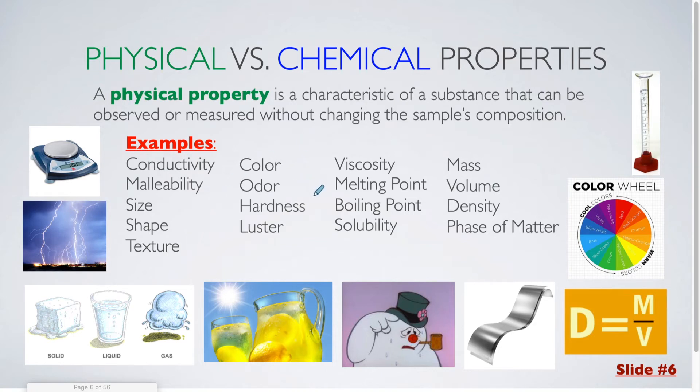Color, odor, hardness, and luster. So luster is a term that you might not be familiar with. It's essentially a scientific word for shining. So this would be a property that a metal like aluminum would have. Viscosity, which is related to how easily a substance can be poured. So we're talking about liquids with that. Melting and boiling point is referring to the temperature at which those phase transitions would occur. So what temperature does an object melt at and what temperature does it boil at?